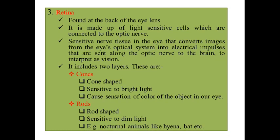The third layer of the eyeball is the retina, which is sensitive to light. This layer is found at the back of the eye. It is made up of light-sensitive cells and contains two types called cones and rods.